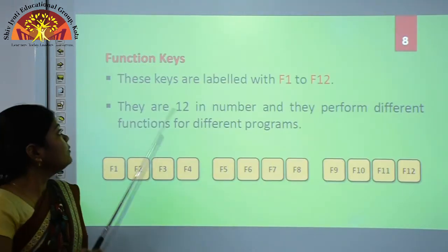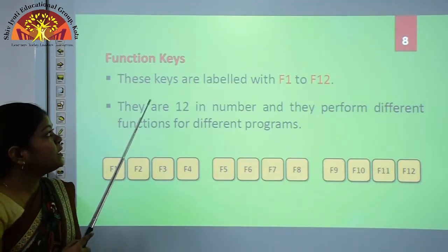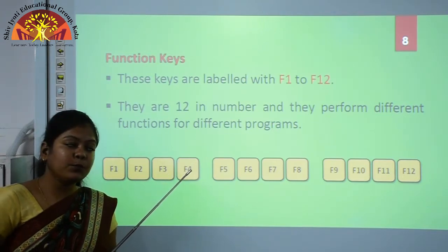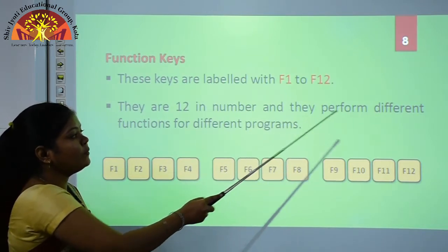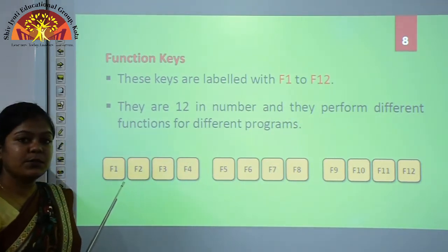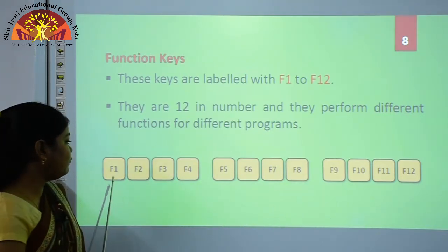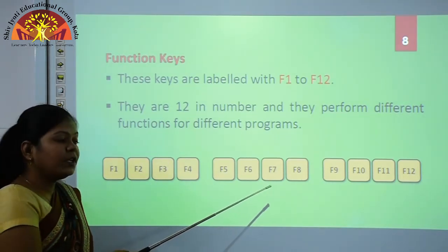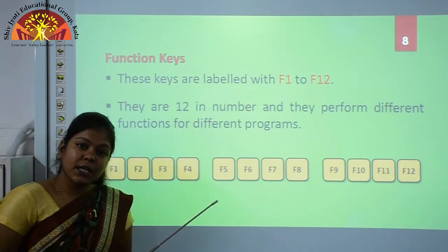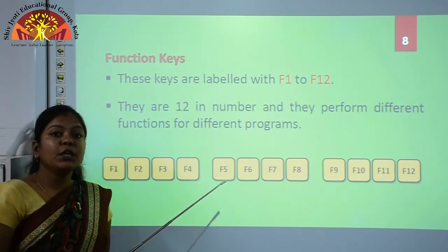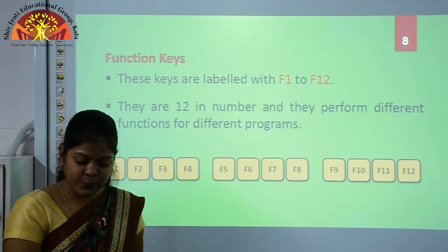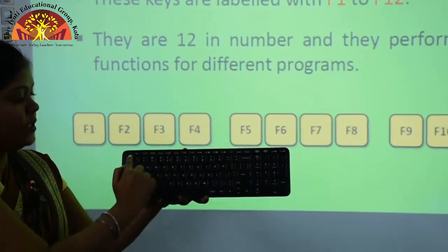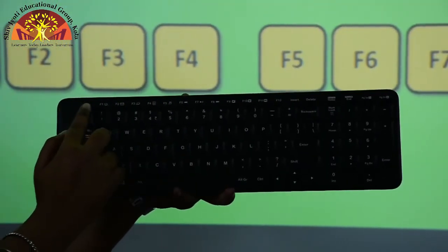Our next special keys are the function keys, labeled F1 to F12. We have a total of 12 function keys on the keyboard, and they perform different functions for different programs. For example, F7 is used for spelling and grammar check in MS Word, and F5 is used to start the slideshow in MS PowerPoint. You can see the function keys F1 to F12 on the top row of the keyboard.